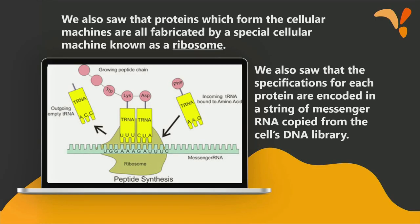It's an amazing process going on in our bodies at all times — it's how we live, how we move, how everything functions. Every kind of living organism has this machine, from bacteria to plants, all the animals and humans. We also saw that proteins which form these cellular machines are all manufactured by a special machine known as a ribosome, and the specifications for each protein are encoded in a string of messenger RNA copied from the DNA library.